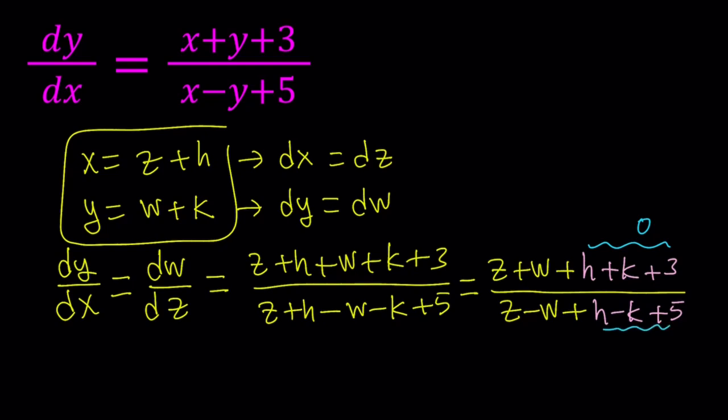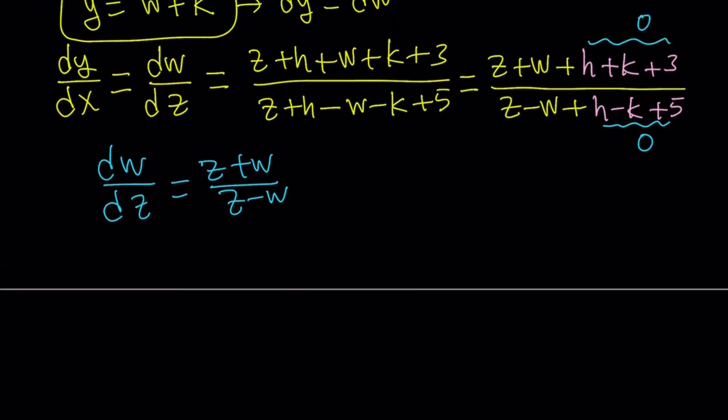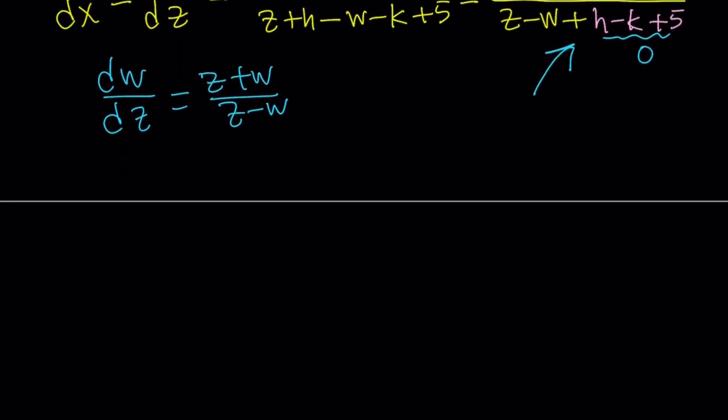So, I want this to be 0, and I want this constant to be 0, so that we can get something much simpler. Let's forget about y and x for now, and let's just write our expression as dw over dz equals z plus w divided by z minus w. So, this is the equation we're going to be solving, but let's go ahead and find the h and k values first. From here, we get two equations that gives us a system.